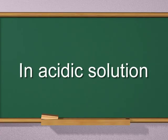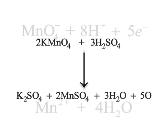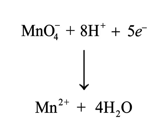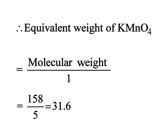In acidic solution, potassium permanganate reacts with sulfuric acid to form potassium sulfate, manganese sulfate, water and nascent oxygen. The relevant ionic equation is shown on screen. According to this equation, in acidic medium, 2 moles of permanganate form 5 nascent oxygen atoms. Hence, the equivalent weight of potassium permanganate in acidic medium is 31.6, obtained by dividing the molecular weight by 5.